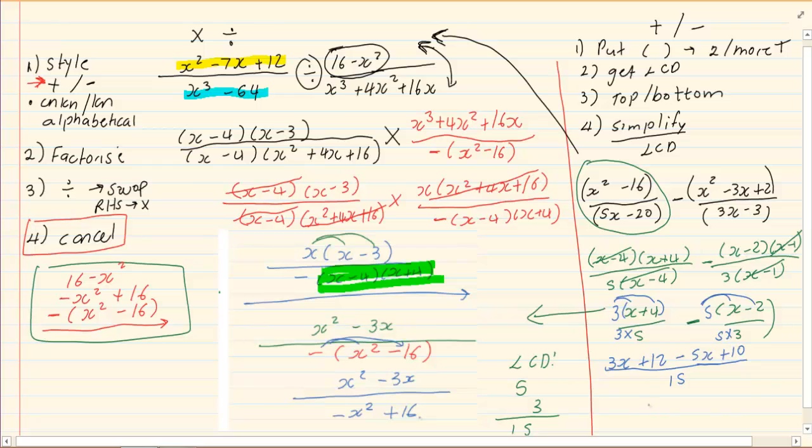If we want to simplify further, we have got minus 2x plus 22 all over 15. Thank you for watching this video.